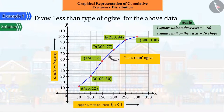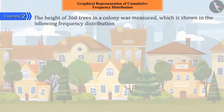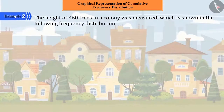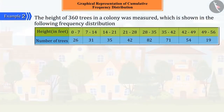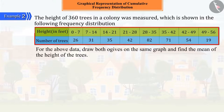Let's look at another example. In a colony, the heights of 360 trees were measured, which is represented in the following frequency distribution. Can you draw both ogives on the same graph for these figures and then find the median height of the trees?